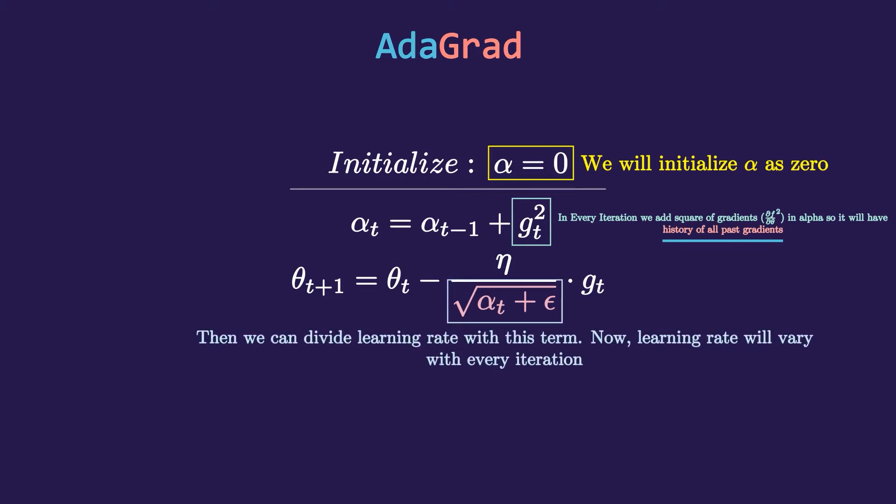Then we can divide the learning rate with the square root of alpha. This thing here is called epsilon and it is a very small number like 10 raised to minus 8 to avoid division by zero error. Now our learning rate will not be the same with every iteration—it will keep changing according to the knowledge of past gradients.